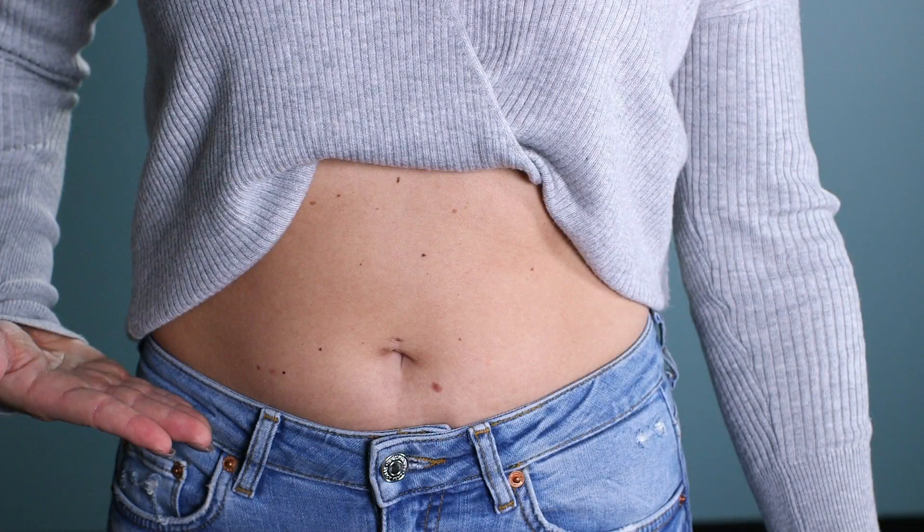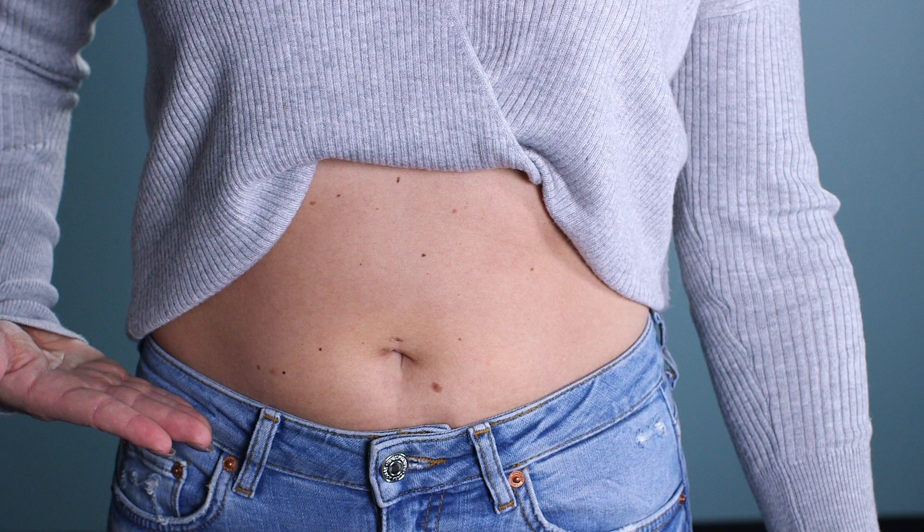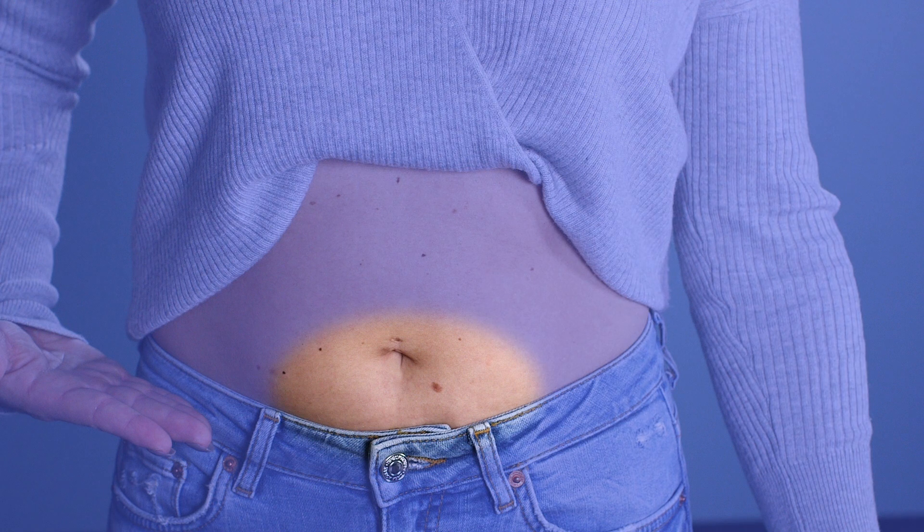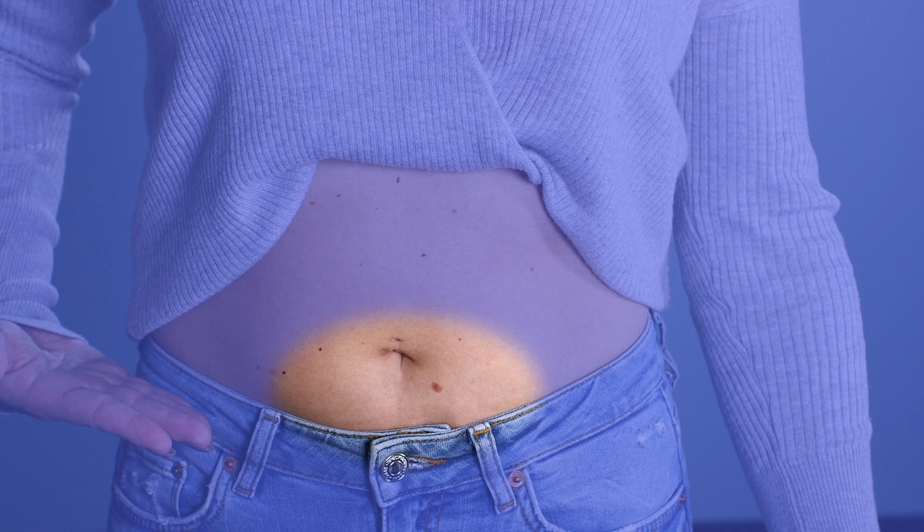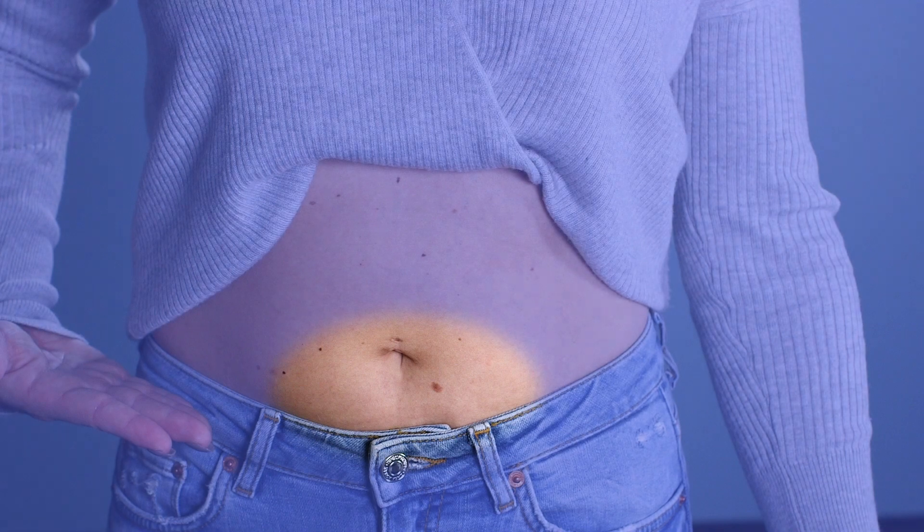For subcutaneous injections, make sure you wash your hands with soap and water. The most common site is the abdomen, using the left, right, or below the belly button, staying approximately 1 to 2 inches away from the belly button. You can also use the back part of the upper arm or the outer aspect of the upper thigh.